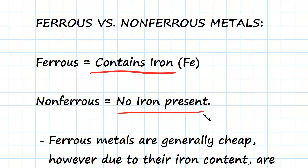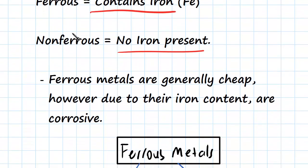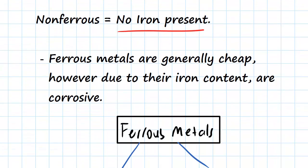So what does this mean characteristically for the metal? What we're interested in is how the characteristics of the metal on a microstructure level are going to affect it in the physical world for building and construction. Ferrous metals are generally cheap; however, due to their iron content, they are corrosive, since iron is the element which is going to corrode.